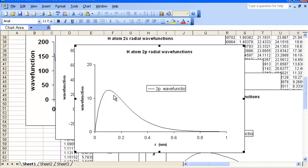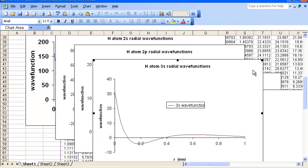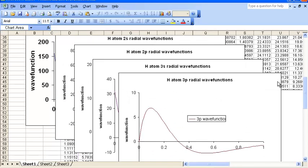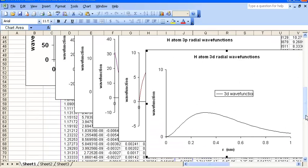So that's the 2p. And we just go on. Here's the 3s. 3s has 2 nodes. There's the 3p has 1 node. And then the 3d has 0 nodes. It goes up and then goes back down again. So that's what the wave function looks like.